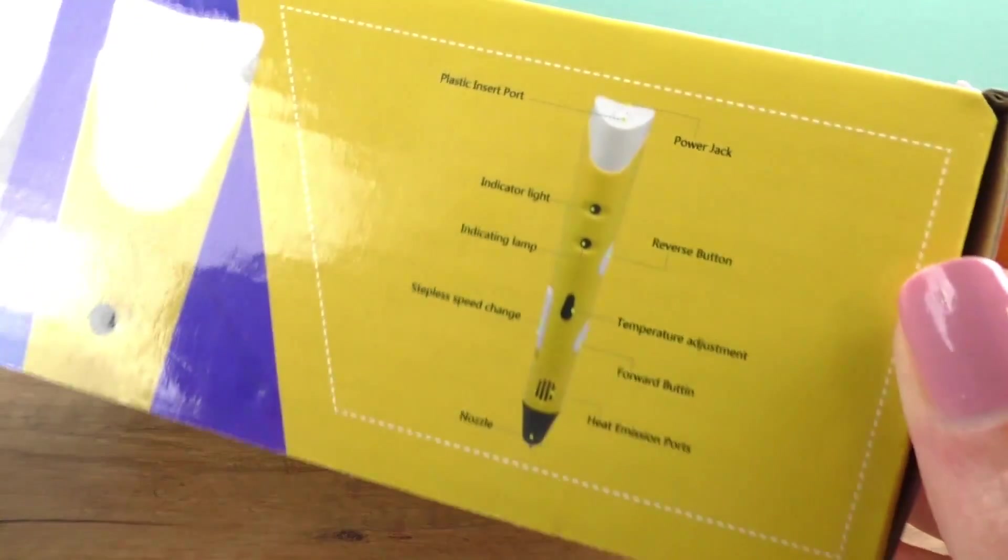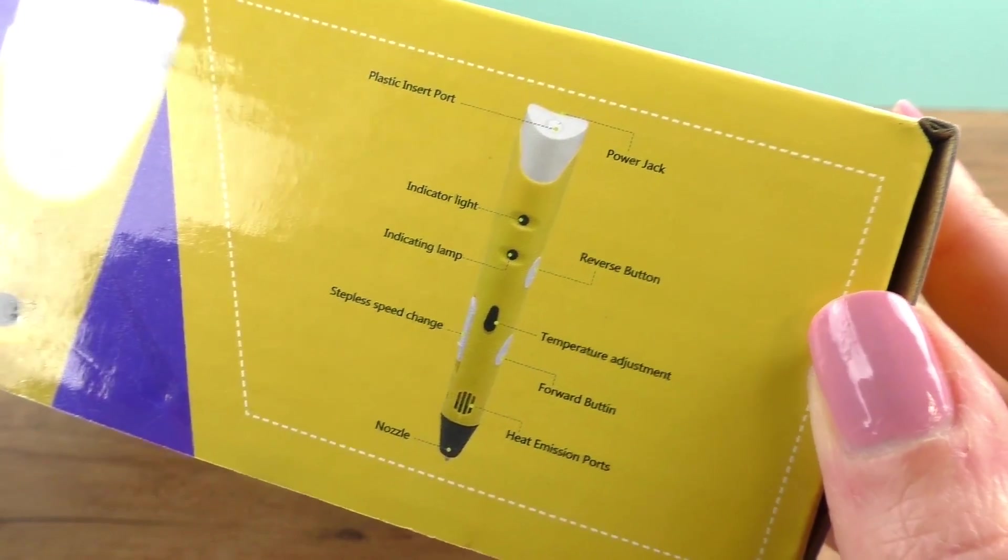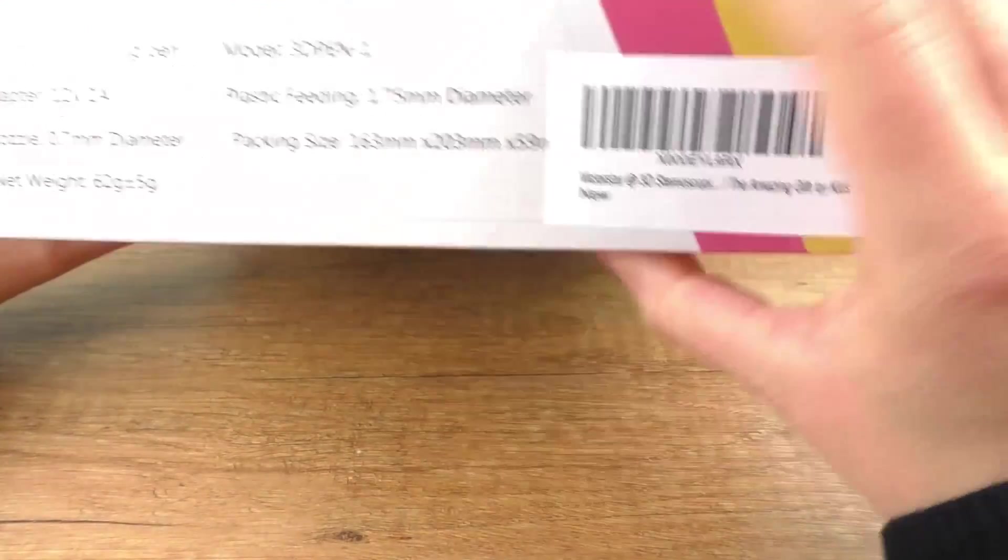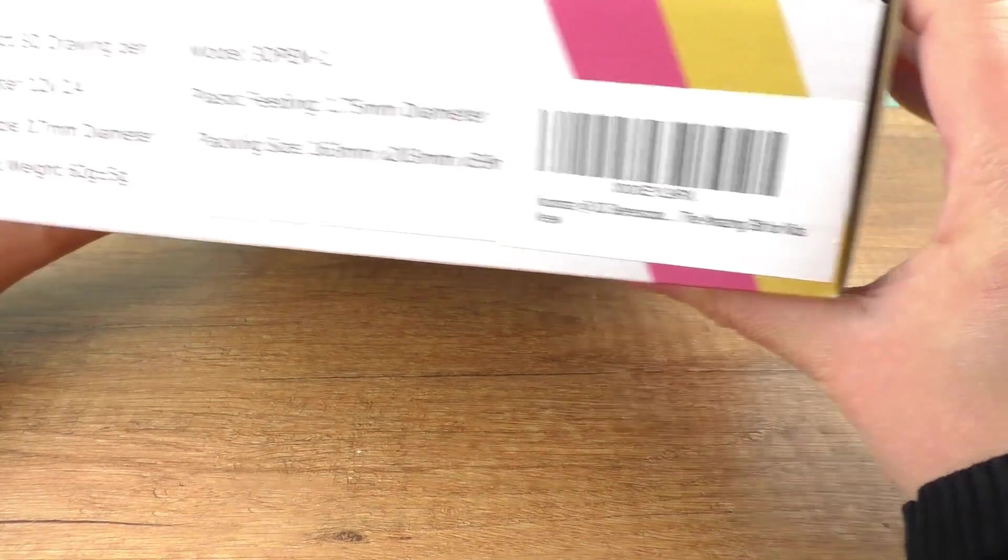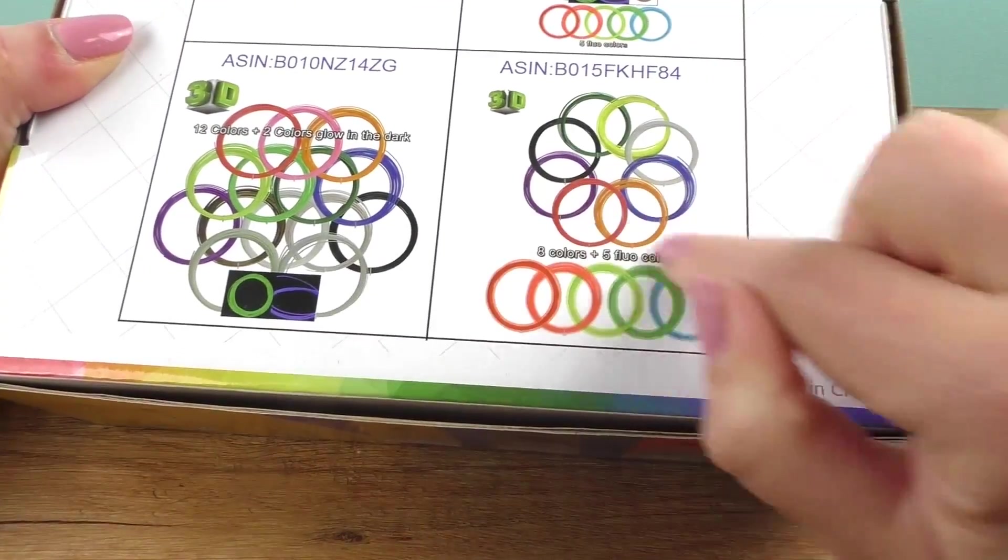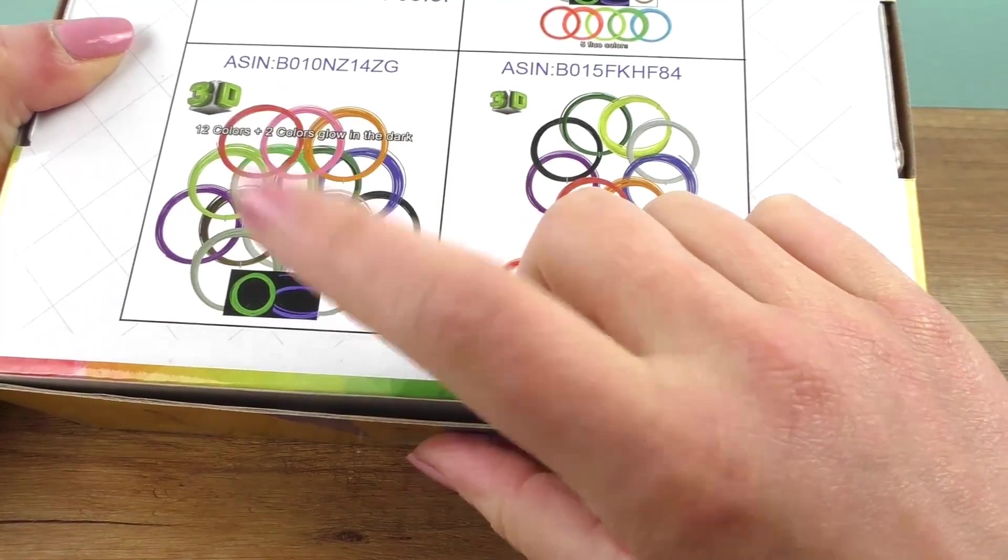So it really looks cool. It should be really easy to use. I'm really excited to try it out. I haven't tried it before. So here we have the four colors. This one is blue. Here on the back side we have some patterns that we could do. Per pen you get 10 meters of plastic.